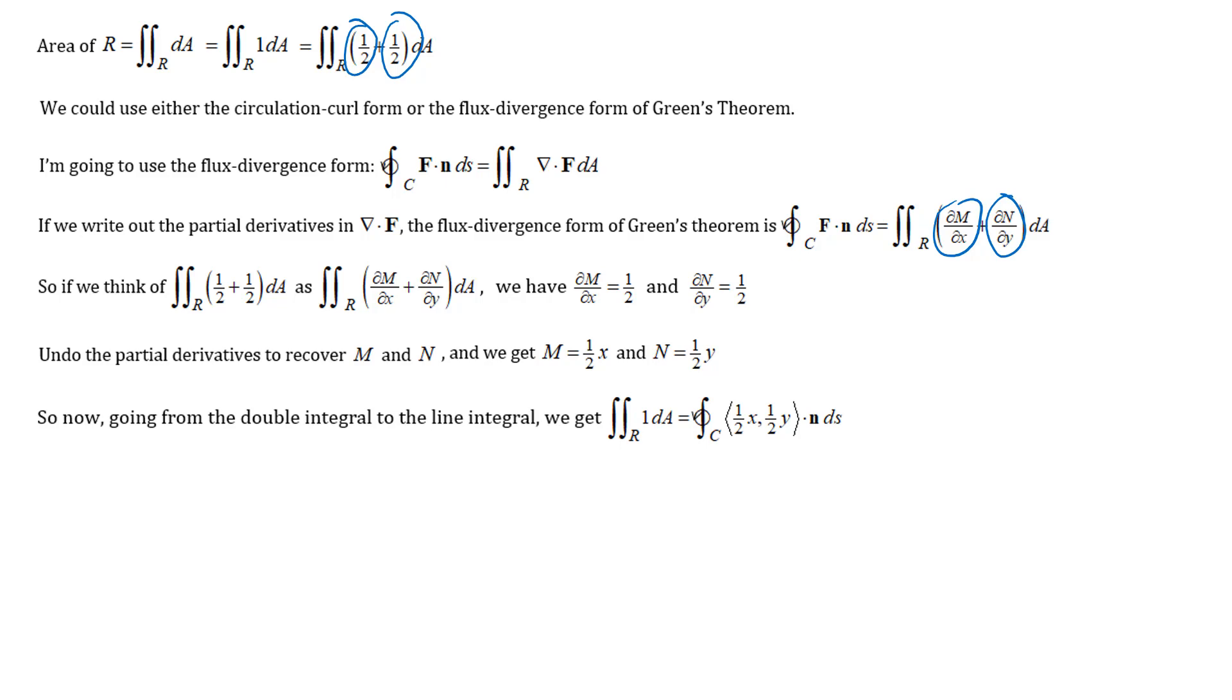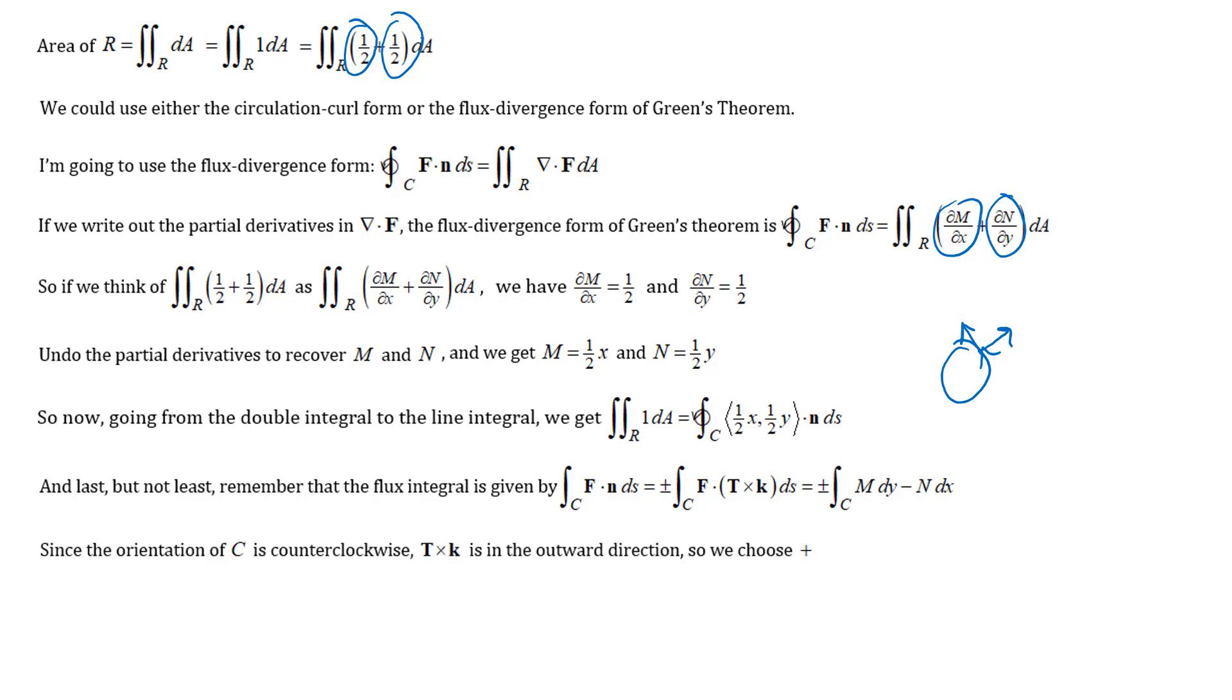So we're going to think a little bit about flux line integrals. Remember that when we did flux line integrals our n vector was given by plus or minus t cross k and when we did that cross product we ended up with m dy minus n dx. So I need to think about plus or minus. On Green's Theorem here we have this counterclockwise circulation for our curve. So your unit tangent vector, if you just imagine where your unit tangent vector would be pointing and think about t cross k then the orientation of t cross k would be outward. So that's in the correct direction for n. So we're going to choose plus on the flux integral.